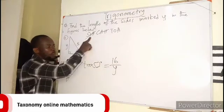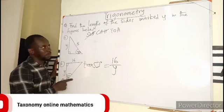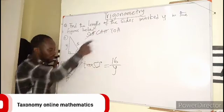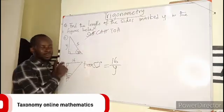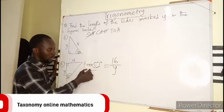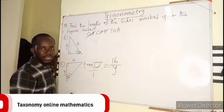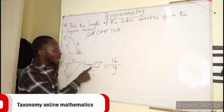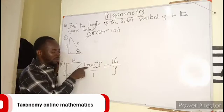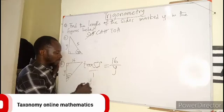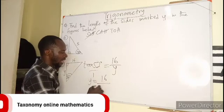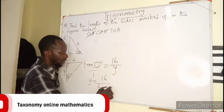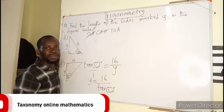Which means tan theta, which is 52 degrees, is equal to the ratio opposite side, 16, over adjacent side, Y. We are having adjacent and opposite, so it is TOA. You can see cross multiplication can happen here. 16 will multiply this, Y will multiply this, and I will divide by this. So Y is just going to be 16 over tan 52 degrees.